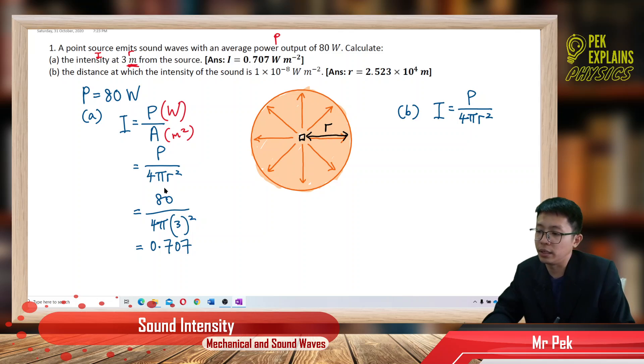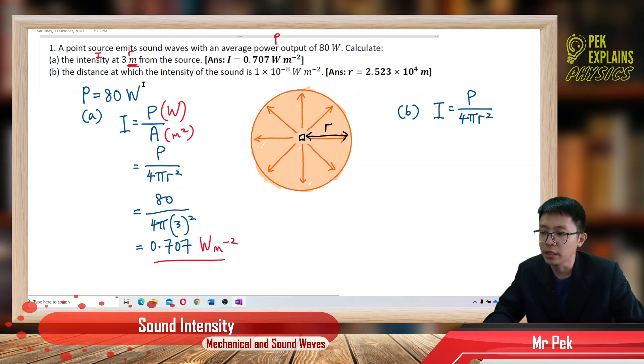So my intensity should be watts per meter square. That's the value for intensity at 3 meters away from the source.